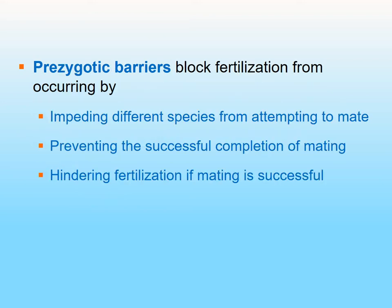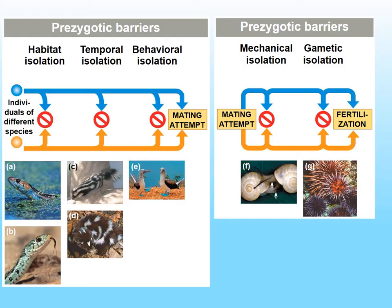Prezygotic barriers are going to block fertilization from occurring. Fertilization is the joining of egg and sperm. Prezygotic barriers can block fertilization by: impeding the species from attempting to mate, preventing the successful completion of mating, or hindering fertilization at the gamete level. The first three prezygotic barriers block the mating attempt, and the last two occur after the mating attempt but block fertilization. So there are different levels of prezygotic barriers.